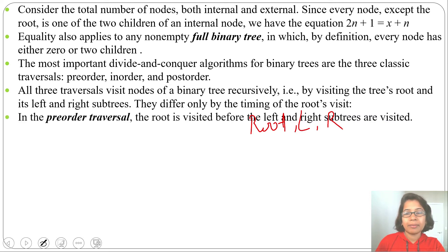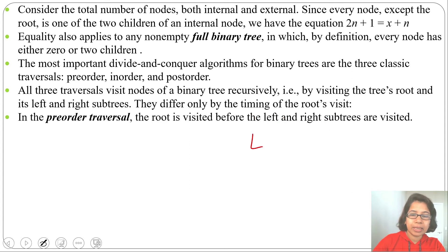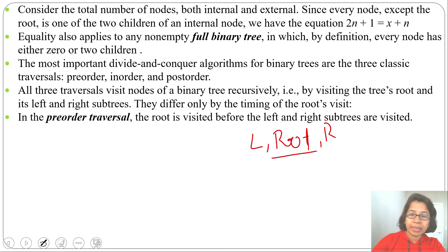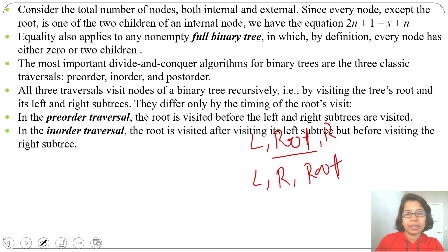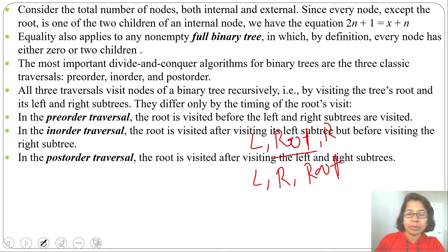The root is visited before the left and right subtrees in pre-order. In in-order traversal, first we visit left, then root, then right — the name is in-order because the root is in between left and right. In post-order, first we visit left, then right, then root — the root is visited last. In in-order, the root is visited after the left subtree and before the right subtree. In pre-order, the root is visited before left and right subtrees.